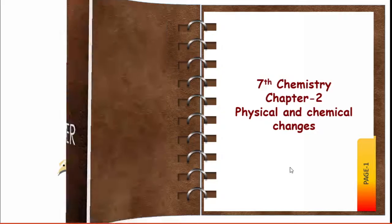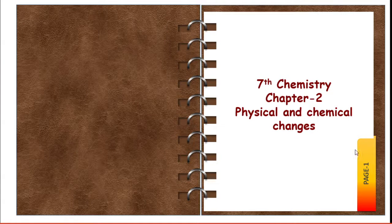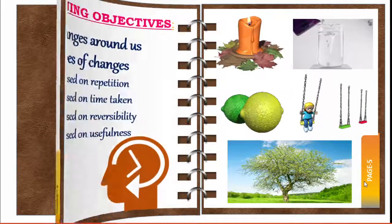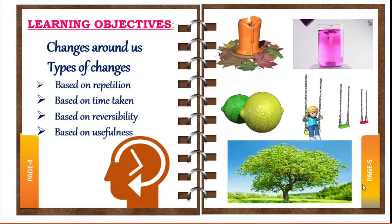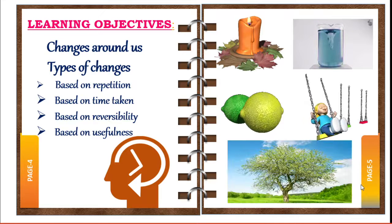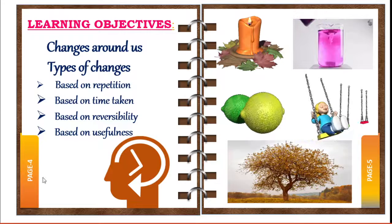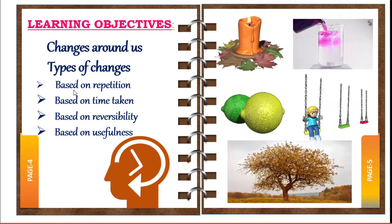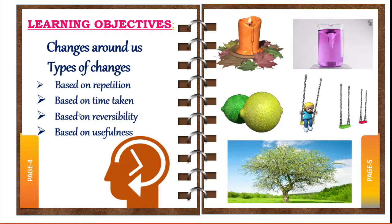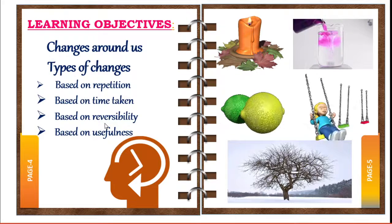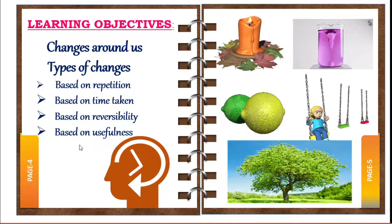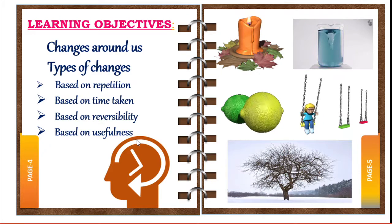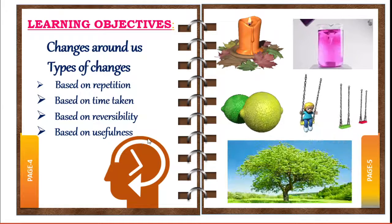Good morning students. We are going to discuss 7th chemistry chapter 2: Physical and Chemical Changes. In this session we are going to discuss changes around us, types of changes — including changes based on repetition, changes based on time taken, changes based on reversibility, and changes based on usefulness.